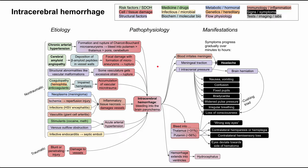This is a mechanism of disease map for intracerebral hemorrhage. I'll be talking about the etiology, the pathophysiology, and the manifestations of intracerebral hemorrhage. Each of these boxes is color-coded according to the core concepts listed at the top right of the slide. I'll be clearing all of these bubbles and talking through each of them one by one.